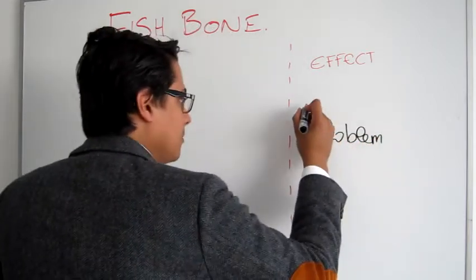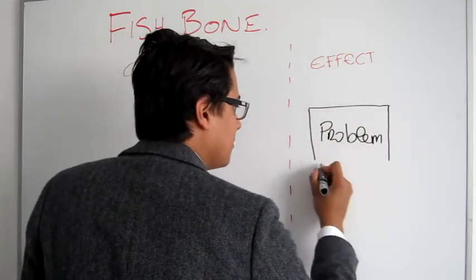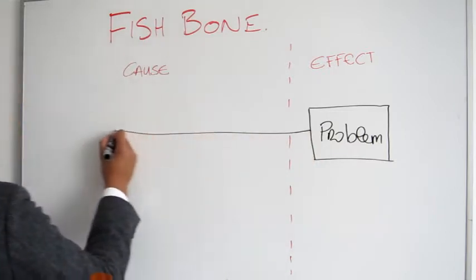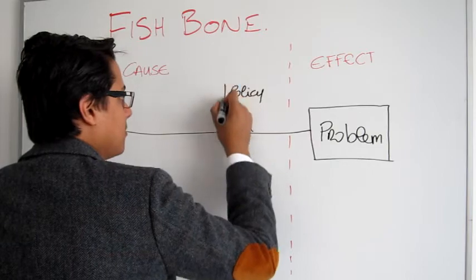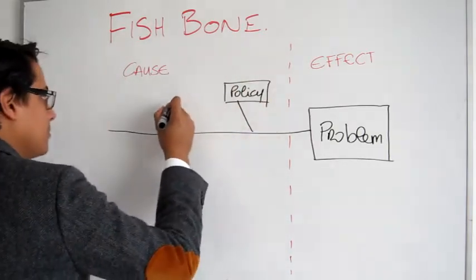The Fishbone Diagram and the 5 Whys work very well together. The Fishbone is simple in concept, really trying to identify the cause and the effect link. The effect being your problem statement.